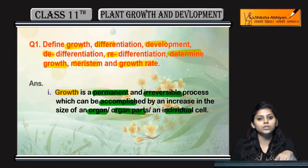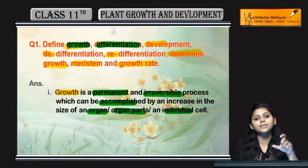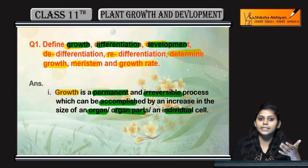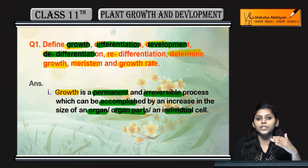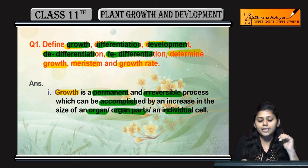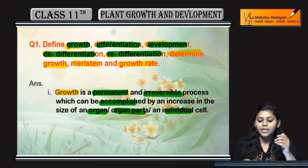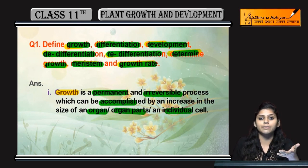So ye thi definitions of growth. Growth kya? Permanent irreversible process hai. Differentiation mein cells mature hote hai, apni division ki capability ko lose karti hai. Development mein kya hai? Jo bhi changes jo ho rahe hai during life cycle, that is development. De-differentiation: mature cell jo gain karti hai capability to divide, that is de-differentiation. Re-differentiation: jo de-differentiated cells hai woh further lose karti hai ability to divide. Determinate growth is a limited growth period. Meristem woh region hai plant ka jahan pe active cell division hoti hai. Growth rate: plant ki growth per unit time is growth rate.